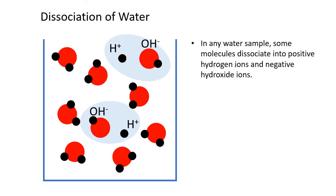So main point, in any sample of water, at any given moment, some of the molecules will have dissociated. They will have split into positive hydrogen ions and negative hydroxide ions.